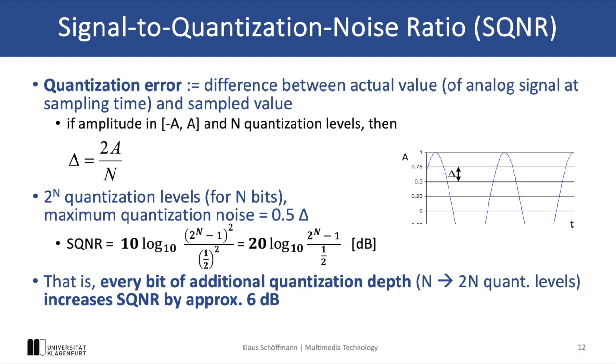Now, this formula basically shows that for every additional bit in the quantization process, the SQNR increases by about 6 dB, and this emphasizes that there is a direct correlation between the bit depth of the quantization and the reduction in quantization noise.